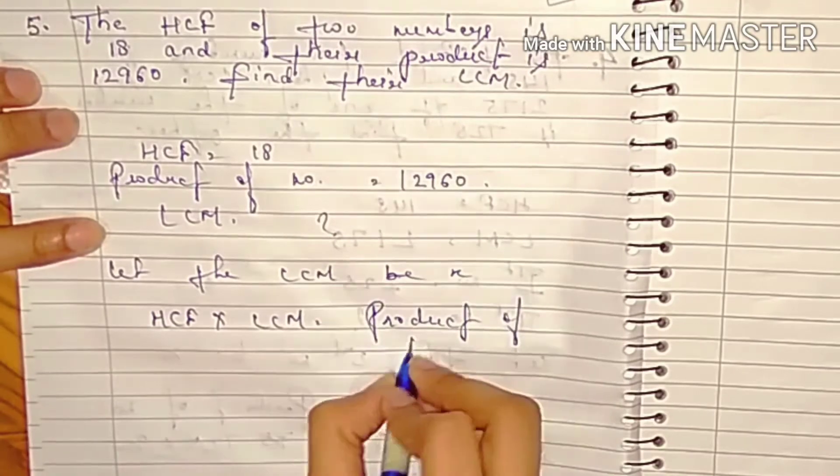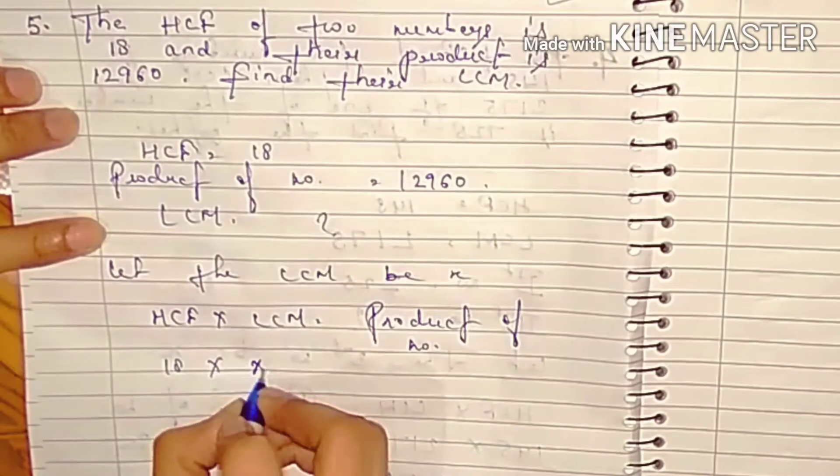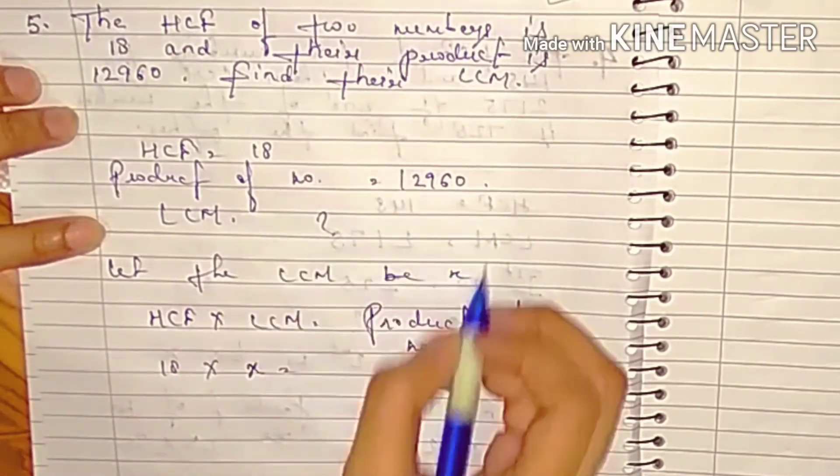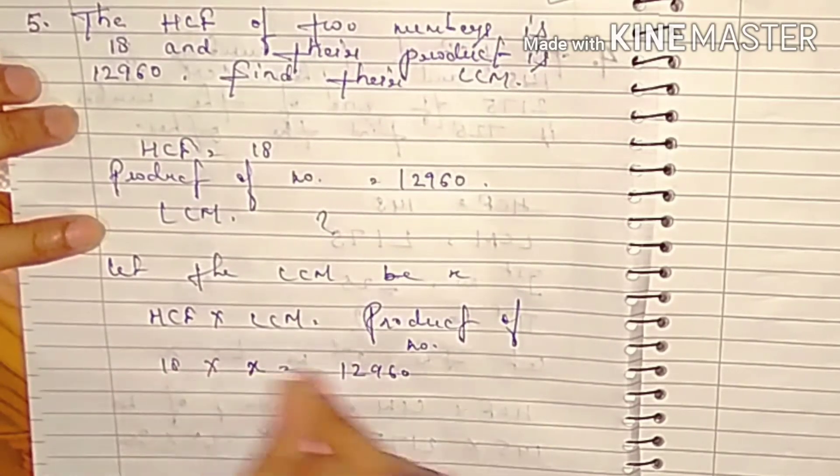So we have HCF the value 18, I'll send a year, then X. And their product of number we have 12,960. To get an actual answer, I can transfer. Learning to carry out X is equal to 12,960 upon 18.